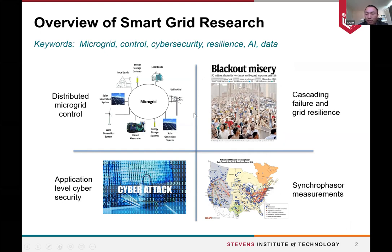The second topic is cascading failure and grid resilience, in which we want to understand why and how cascading failures can actually happen in a system that is commonly considered as being very reliable, and how we can identify the critical components that play critical roles in initiating and propagating failures, and further develop mitigation strategies to reduce the risk of large-scale blackouts.